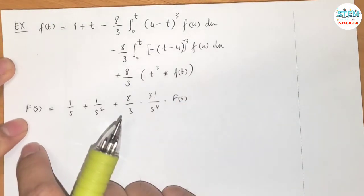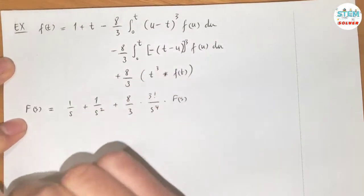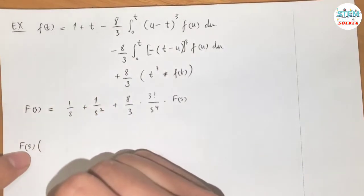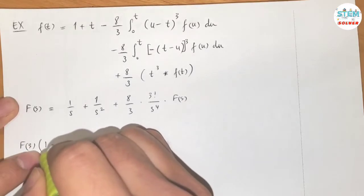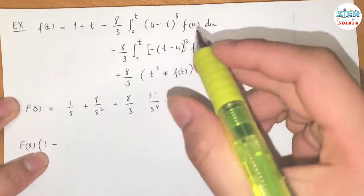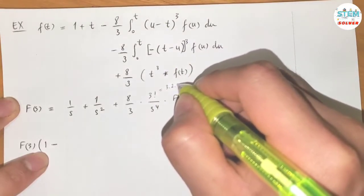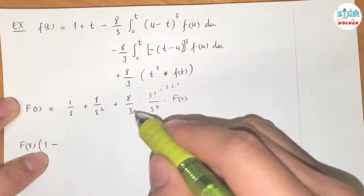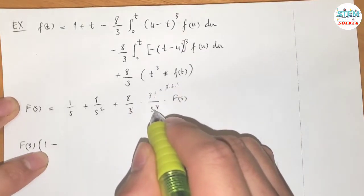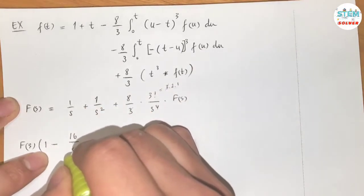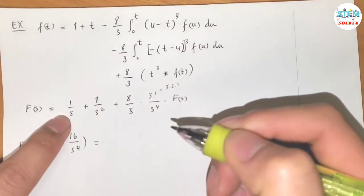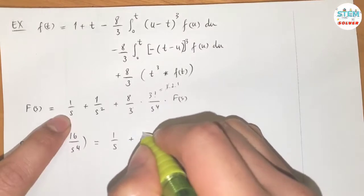We have capital F of S on both sides. What I'm going to do is bring it to one side and factor it out. So let me move this to the left side and factor it out. Then I have capital F of S times 1 minus. Watch out here. 3 factorial equals 3 times 2 times 1, so 3 cancels out, and 8 times 2 is 16, so I have 16 over S to the 4th. For this one, we'll just rewrite it, 1 over S plus 1 over S squared.